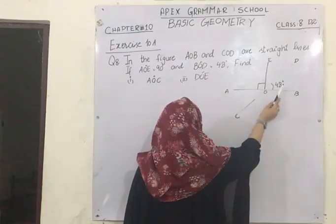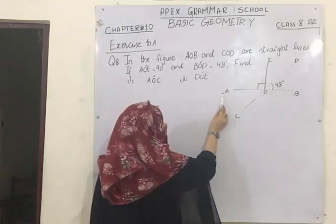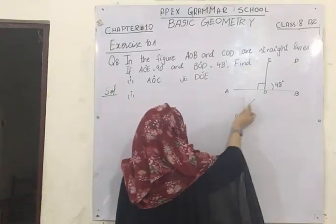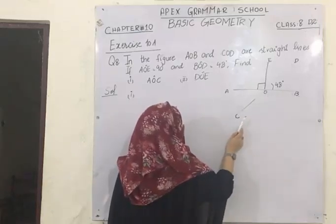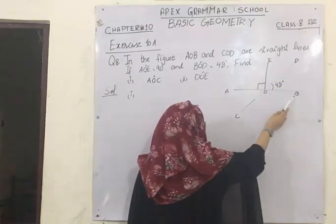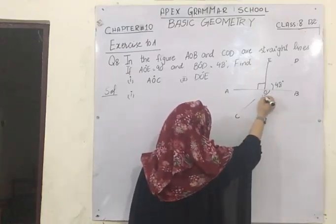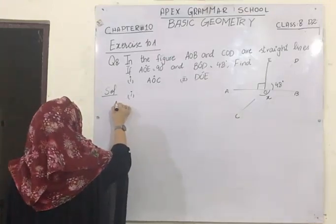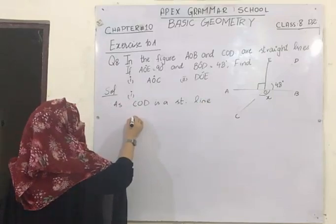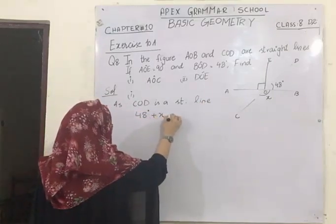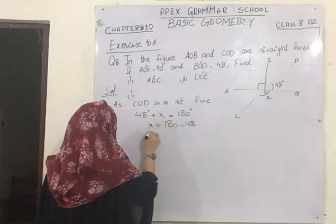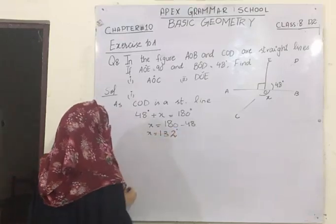In the first part, we have to find angle AOC. To do this, I first need to find angle BOC using the fact that COD is a straight line. I will name angle BOC as x. Since COD is a straight line, 48 degrees plus x equals 180 degrees. Since 48 is being added, it will be subtracted on the other side, so the value of x is 132 degrees.